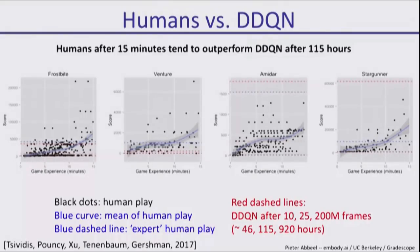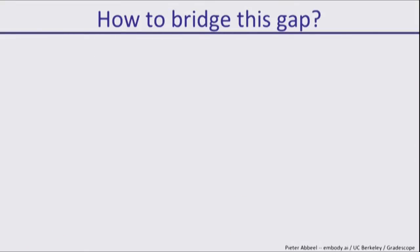This picture here is from a paper from Josh Tenenbaum's lab. What we see in black dots is human players. Horizontal axis is minutes played, vertical axis is score in the game. After about 15 minutes of play, humans are outperforming double DQN after it has played for 115 hours and often after 920 hours. There's a pretty big gap between current RL and what humans can do.